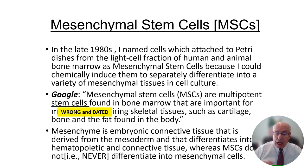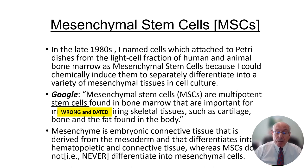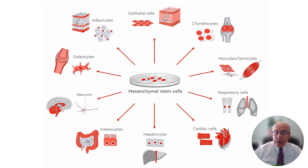The word mesenchyme is a fancy English word for the mesodermal layer or embryonic connective tissue layer that forms your hematopoietic system and your connective tissue. These mesenchymal stem cells do not — as in never — differentiate into mesenchymal phenotypes.